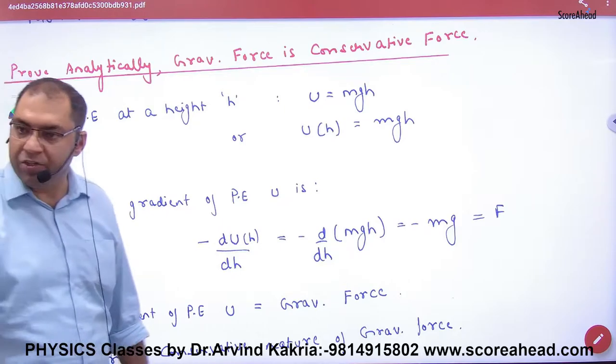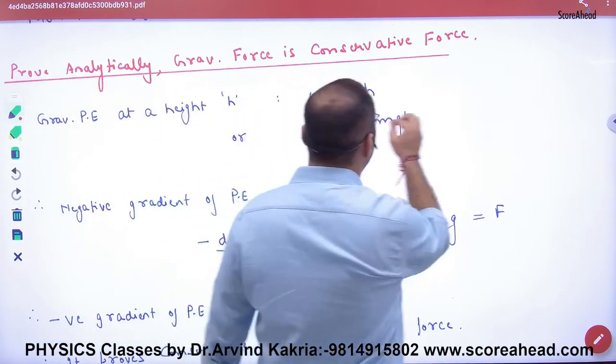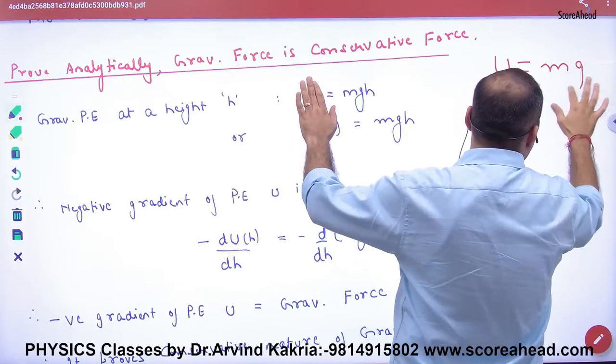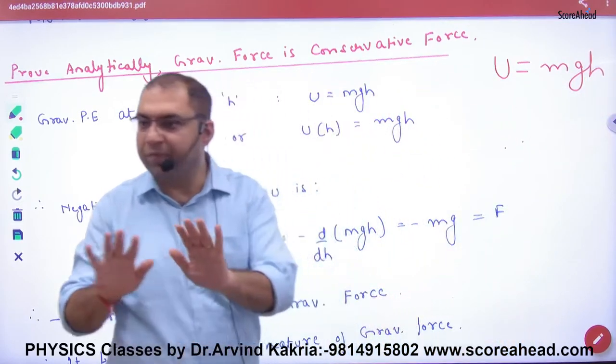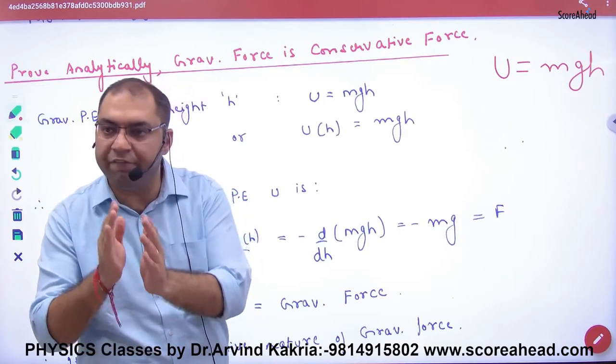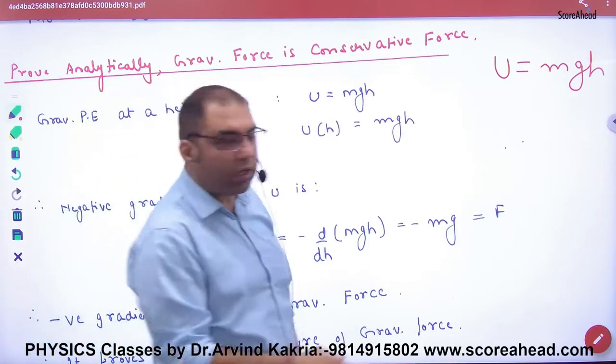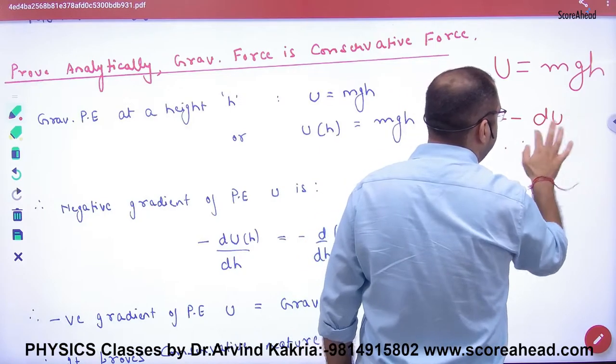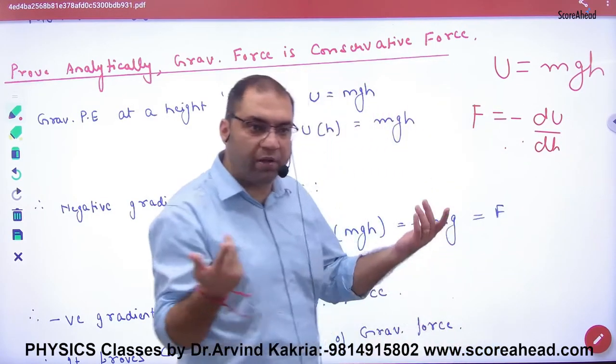You will simply do one thing. You will say that the potential energy of gravity is U equals mgh. And if it is conservative force, then this formula is valid. We have done it.